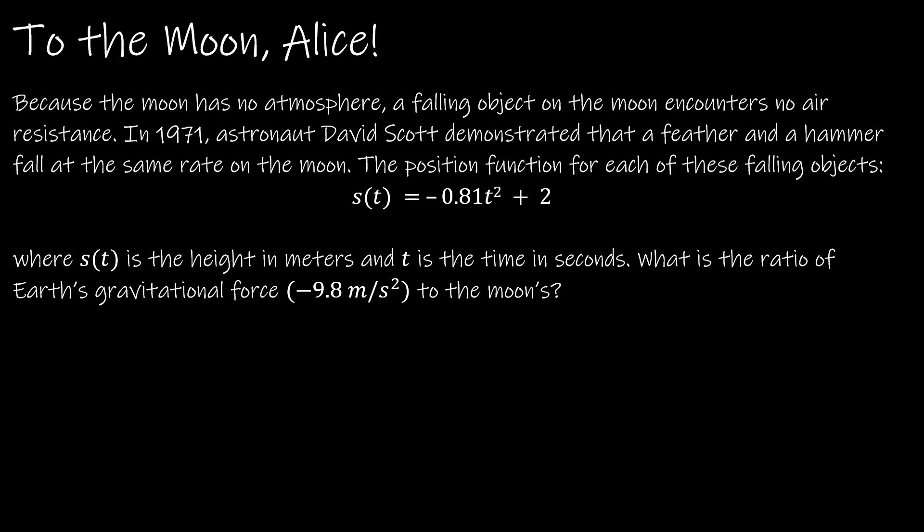So let's take a look at how to use the second derivative or the acceleration function. And of course, I could just find the acceleration, but this question says that they want us to find the ratio of the Earth's gravitational force to the moon's. So the moon has no atmosphere and a falling object on the moon encounters no air resistance. In 1971, David Scott demonstrated that a feather and a hammer fall at the same rate on the moon. And then the position function is given. So here is my position function.